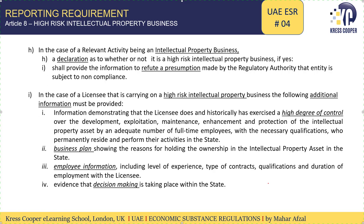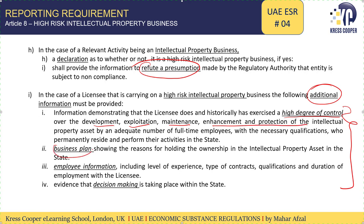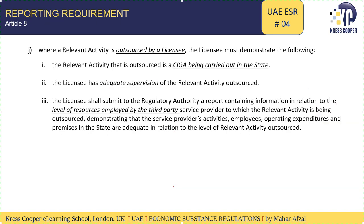In the case of a high-risk intellectual property business, the licensee will be required to provide additional information to refute the presumption that the economic substance test has not been met. The core objective of this additional information is to prove that the licensee is the genuine owner of the intellectual property and is conducting the activity in the UAE. This includes: a high degree of control over the development, exploitation, maintenance, and enhancement of the intellectual property; a business plan showing the reason for holding ownership; employee information; and evidence that decision-making is taking place within the state.